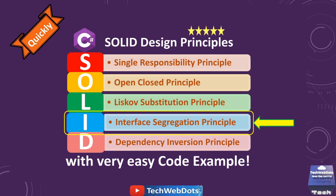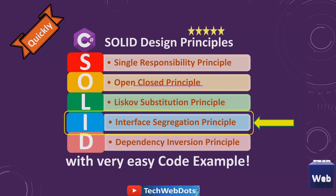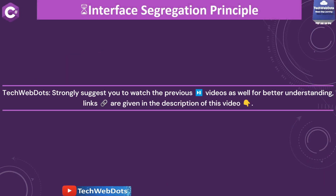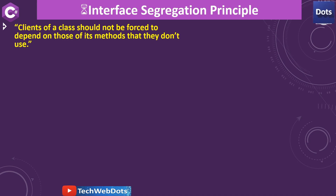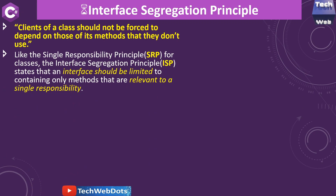I have already explained all these principles and the link is given in the description of this video, so you can go there and watch all of these. But today I will discuss in detail the Interface Segregation Principle. So what is the golden rule? It says: clients of a class should not be forced to depend on those of its methods that they don't use.